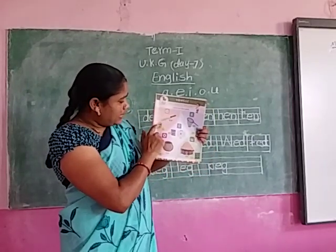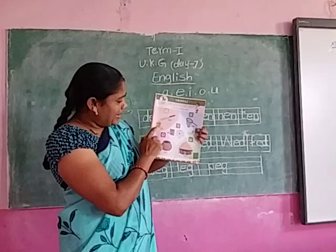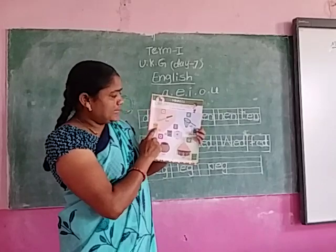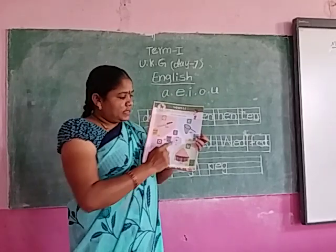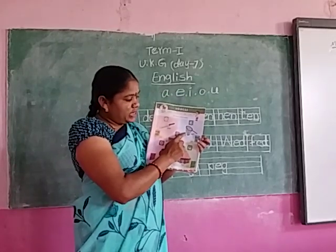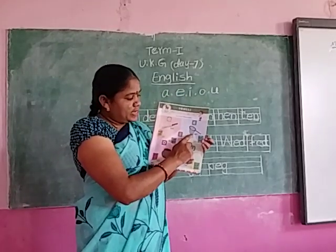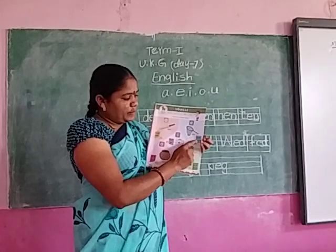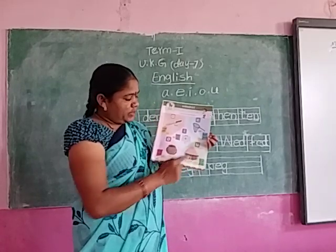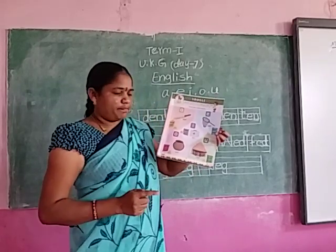Vowel A letter words: B-A-T bat, M-A-T mad, C-A-T cat. Then after, vowel E letter words: N-E-T net, P-E-T pet, W-E-T wet.